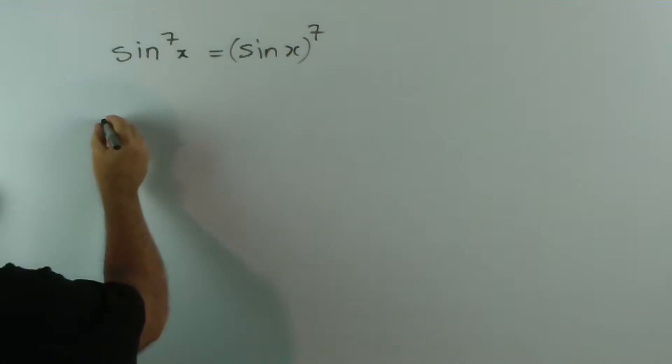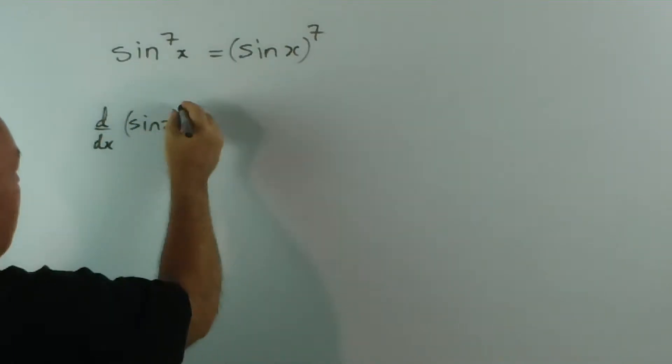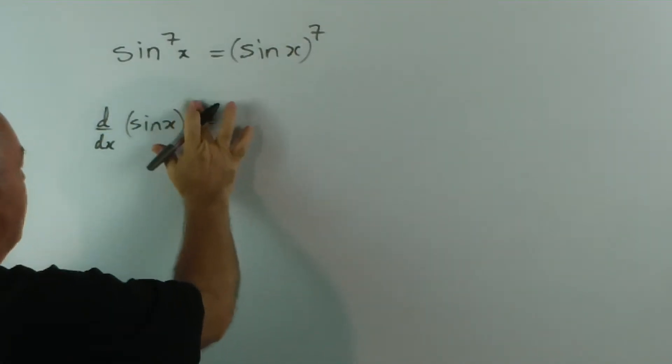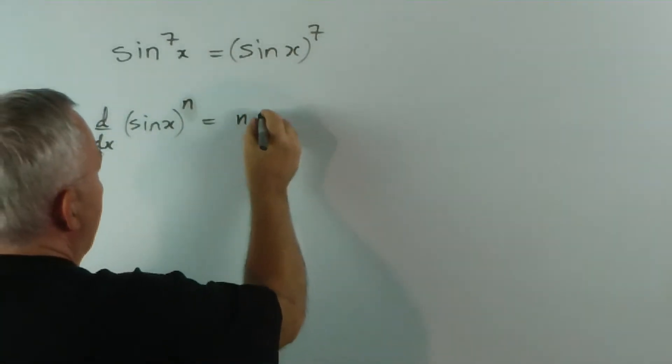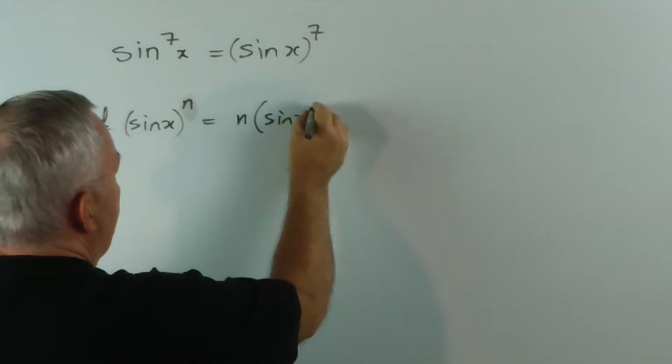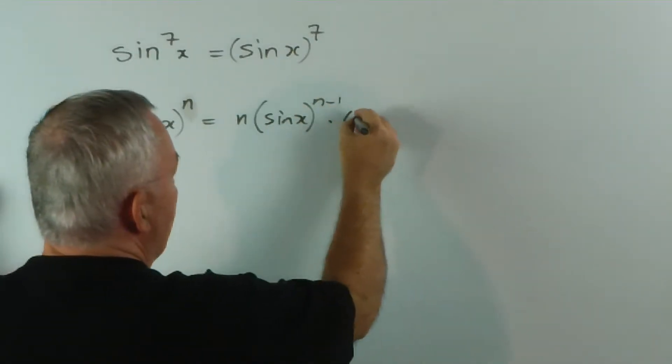The second thing is that when we find the derivative of sine x to some power, I'll use power n. The derivative is n sine x to the n-1 times the derivative of sine x, which is cos x.